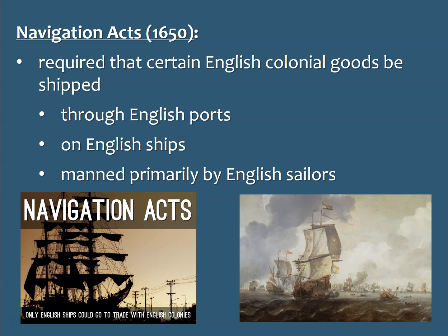To pursue mercantilist policies, the British instituted a series of laws known as the Navigation Acts, back in 1650 — about 43 years after the settlement of Jamestown. These laws required that English colonial goods had to be shipped through English ports. For example, tobacco from Virginia would have to go to an English port like Liverpool. The goods also had to be carried on English ships, manned primarily by English sailors. This put limits on who you could do business with and how.